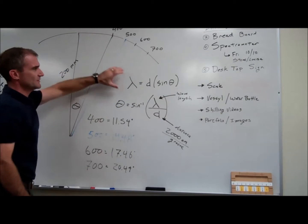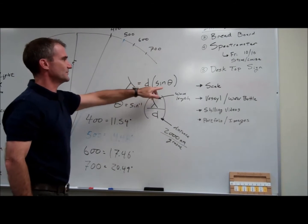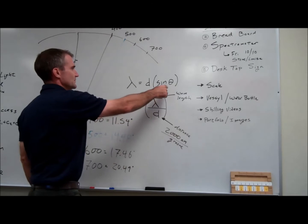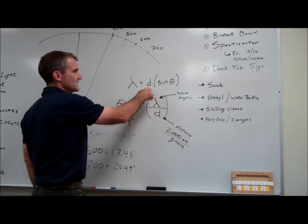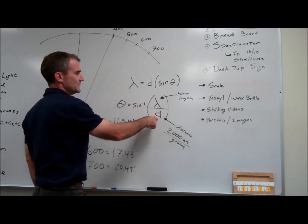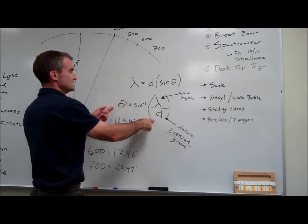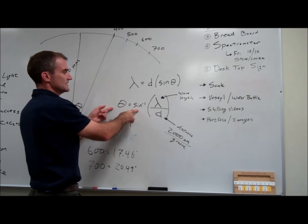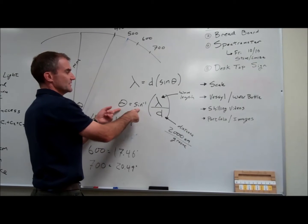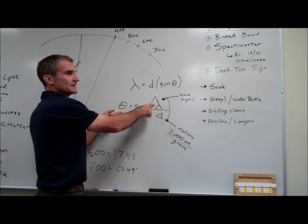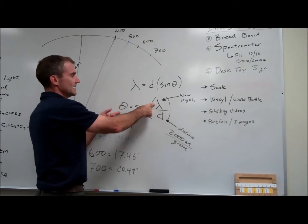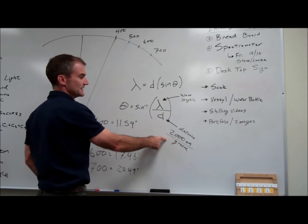So this equation - if I solve for theta, my independent variable theta by itself, I divide both sides by distance. I have lambda over distance, and then I have sine of theta equals lambda over distance. I take the arc sine of both sides and that gives me an angle equal to the arc sine of the wavelength, divided by the distance on that grid.